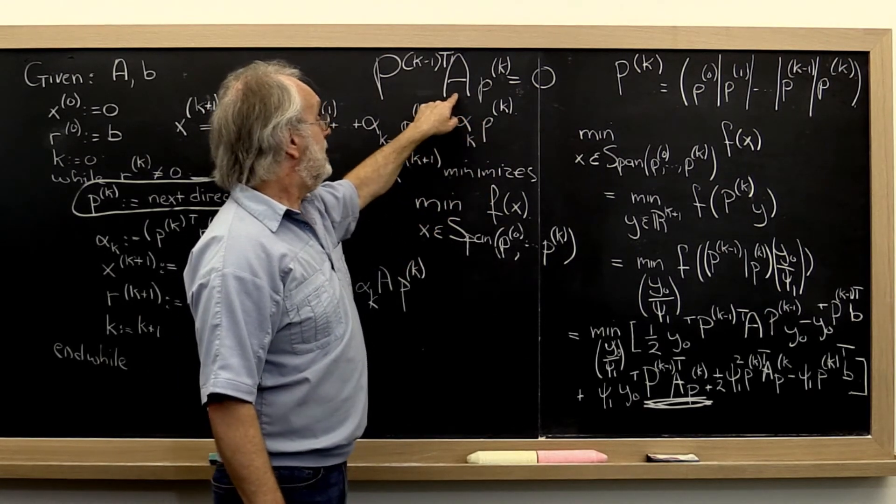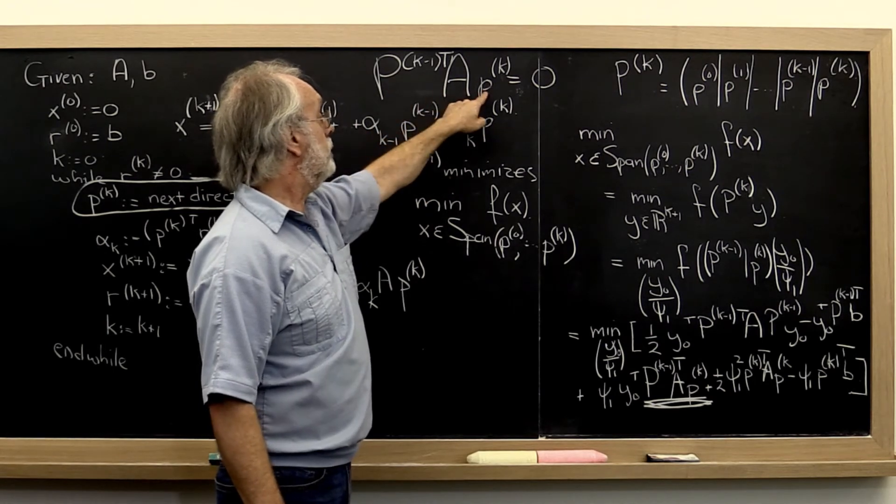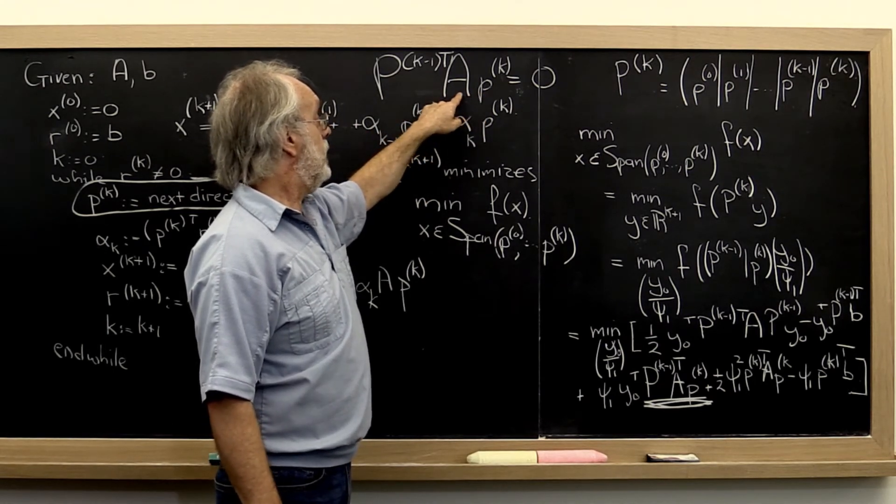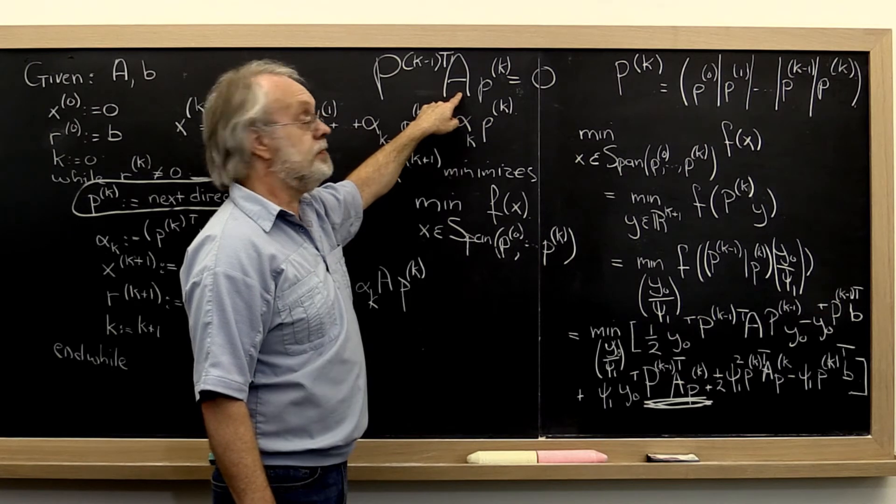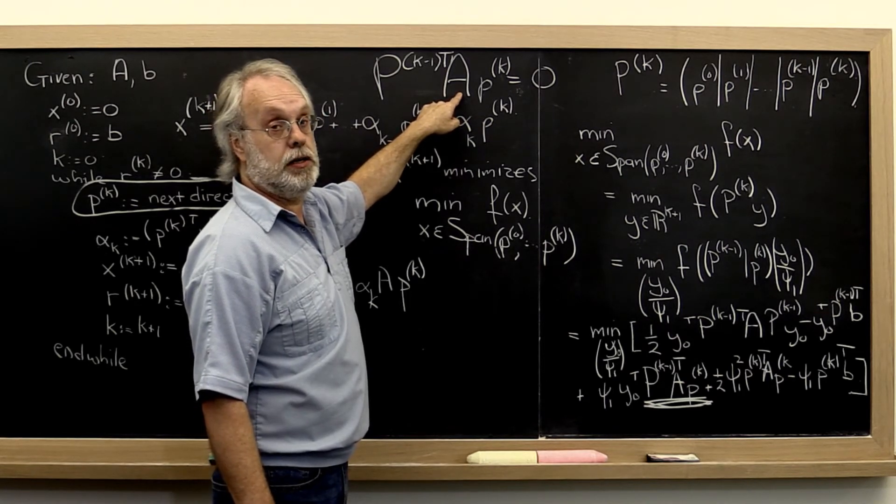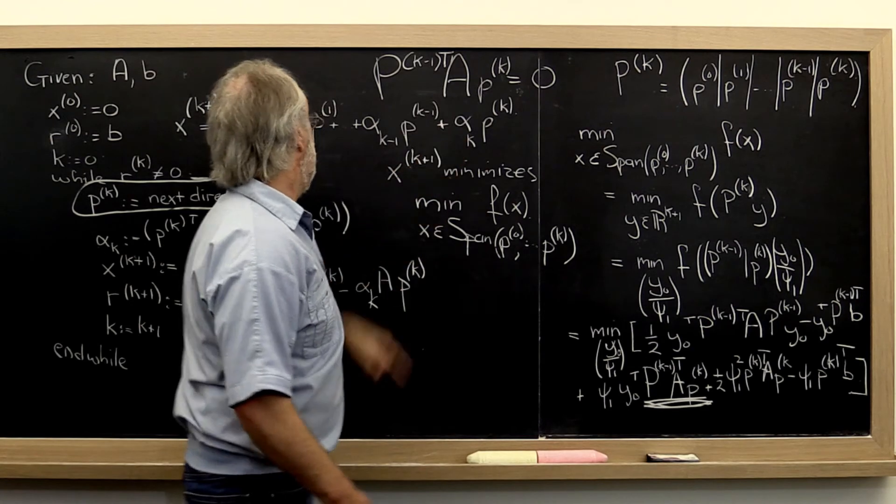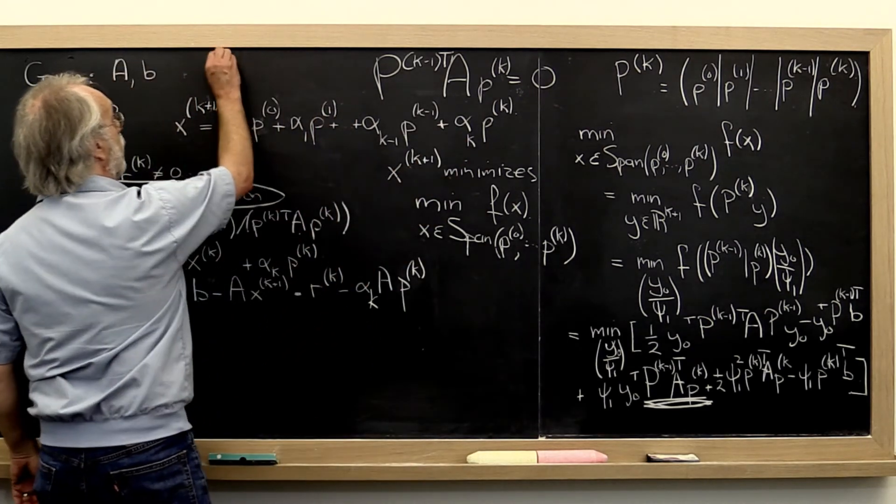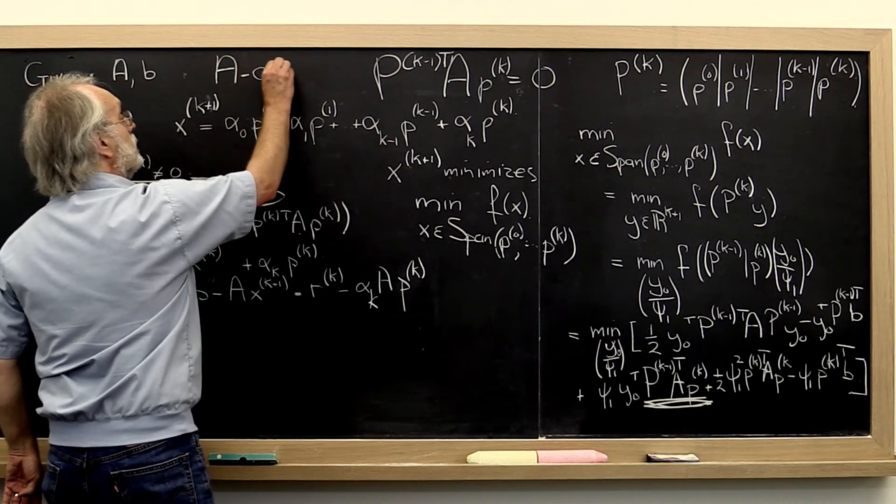So this is sort of kind of like taking a dot product except we have this matrix A, this symmetric positive definite matrix A thrown in. And this property right here says that these vectors are A conjugate.